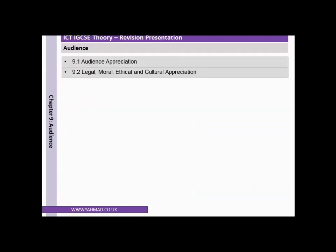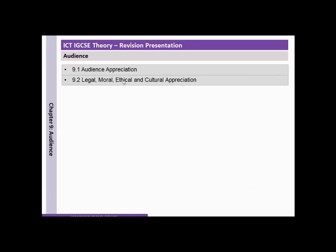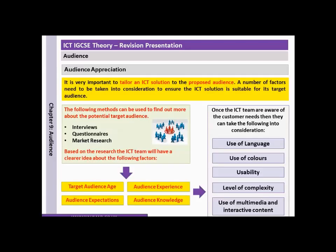We've come to the end of chapter 9. Chapter 9 includes audience appreciation — that's where you're building a software solution for an audience and you need to understand their needs. You can find out by doing interviews, questionnaires and market research to see what other people are using and what they think about existing products. You need to know specifically about who will be using the product: their age, experience, expectations and knowledge. If users will be of a higher ability, the solution will be more complicated; if users will be of a lesser ability or younger age, you need to make something more suitable for their needs.